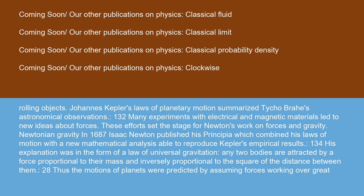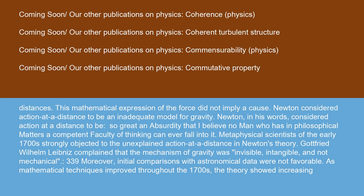Newtonian gravity: In 1687, Isaac Newton published his Principia, which combined his laws of motion with a new mathematical analysis able to reproduce Kepler's empirical results. His explanation was in the form of a law of universal gravitation. Any two bodies are attracted by a force proportional to their mass and inversely proportional to the square of the distance between them. Thus the motions of planets were predicted by assuming forces working over great distances. This mathematical expression of the force did not imply a cause.